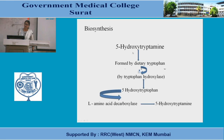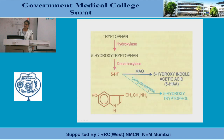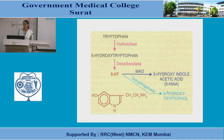How is 5-hydroxytryptamine synthesized? It is formed from dietary tryptophan by the action of tryptophan hydroxylase, producing 5-hydroxytryptophan. This 5-hydroxytryptophan, when acted upon by L-amino acid decarboxylase, leads to the formation of 5-hydroxytryptamine. When acted upon by monoamine oxidase, it gets converted into 5-HIAA (5-hydroxyindoleacetic acid), and when acted upon by dehydrogenase enzyme, it gets converted into 5-hydroxytryptophan.